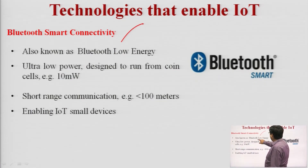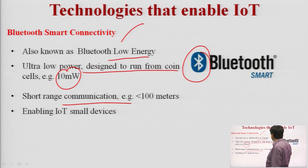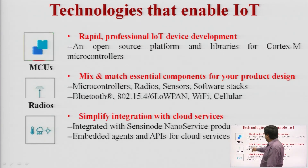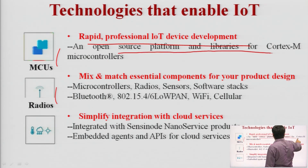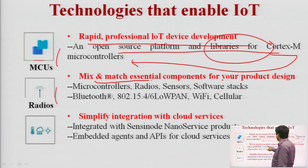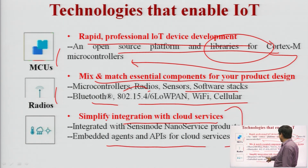Bluetooth Smart connectivity — Bluetooth Low Energy — is powered from coin cells at about 10 milliwatts for short-range communication under 100 meters. Cortex-M microcontrollers support rapid professional IoT development with open-source platform libraries. Components can be mixed and matched for product design: Bluetooth, LoRaWAN, Wi-Fi, cellular sensors, software stacks, radios, and simplified cloud service integration through embedded agents, APIs, and nano services.